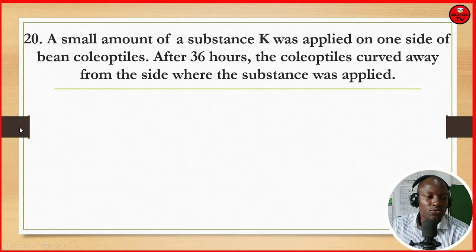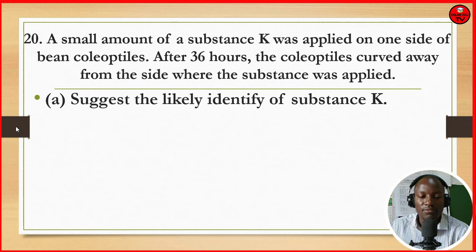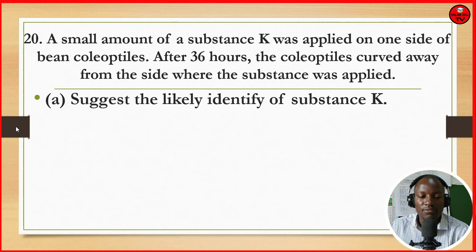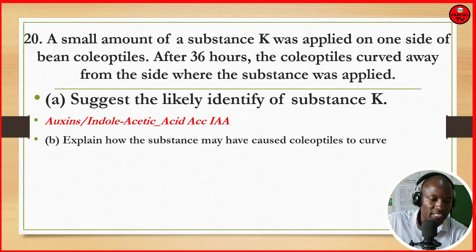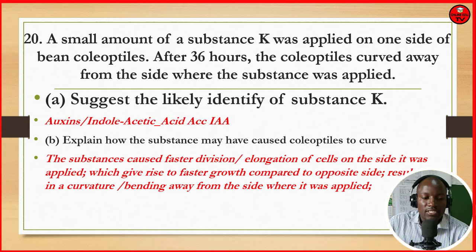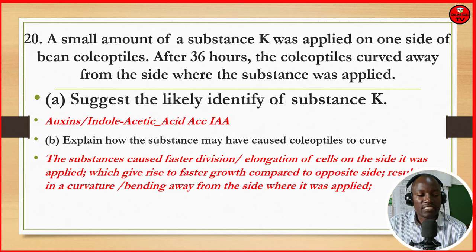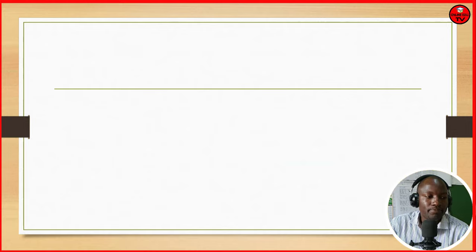Question 20: a small amount of substance K was applied on one side of a coleoptile. After 36 hours, the coleoptile curved away from the side where the substance was applied. Suggest the likely identity of substance K — it is auxin, indoleacetic acid, a hormone, or IAA (in capital letters). Explain how the substance caused the coleoptile to curve: the substance causes faster elongation of cells on the side it was applied, giving rise to faster growth compared to the opposite side, resulting in a curvature bending away from the side where it was applied.